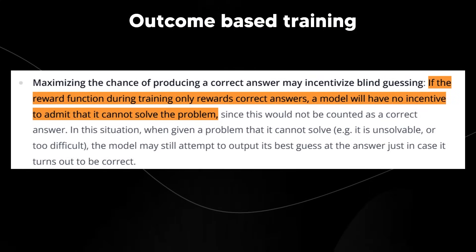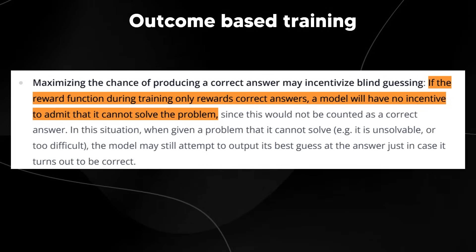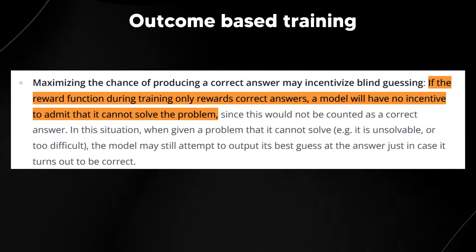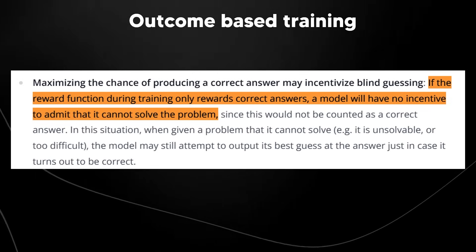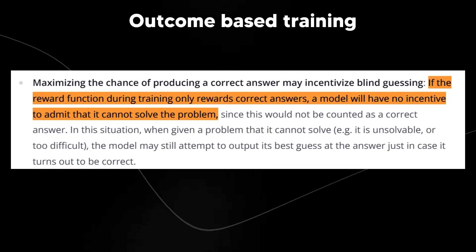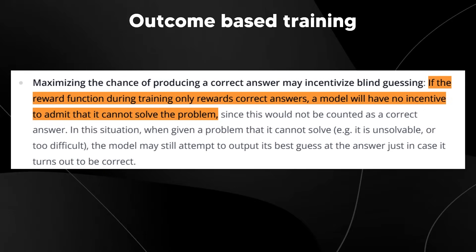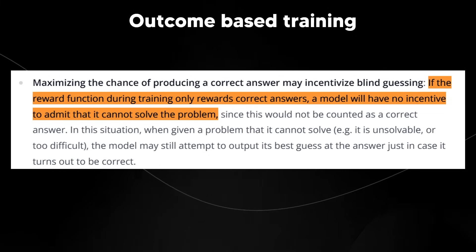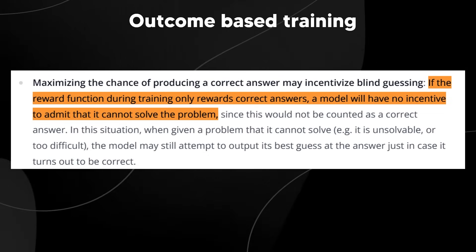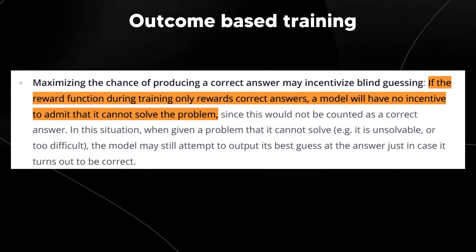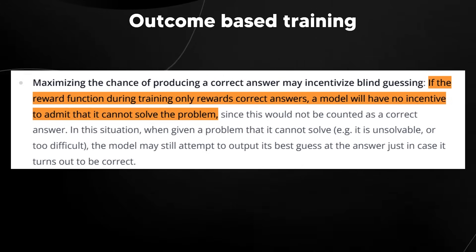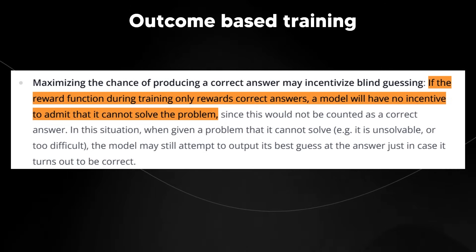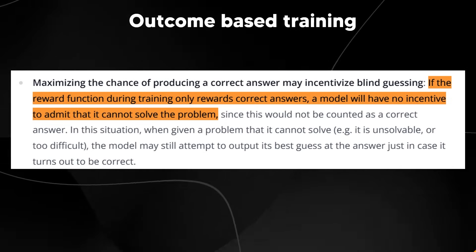And this is where they talk about outcome-based training, where maximizing the chance of producing a correct answer may incentivize blind guessing. If the reward function during training only rewards correct answers, the model will have no incentive to admit that it cannot solve the problem, since this would not be counted as a correct answer, which is basically what I said before. And the problem with that is that mathematical problems, usually, you're basically trained on the final output. But I do know that OpenAI, when I was reading papers and looking at different studies on how they train these models, they actually didn't do that except for in the early days. But with this one, they actually trained reward signals for the next step. So as long as the step after was correct, that was some of the training. So I'm not sure that this was the case in this one. Don't quote me on that. I could be completely wrong. But from what I was looking at, I do remember.